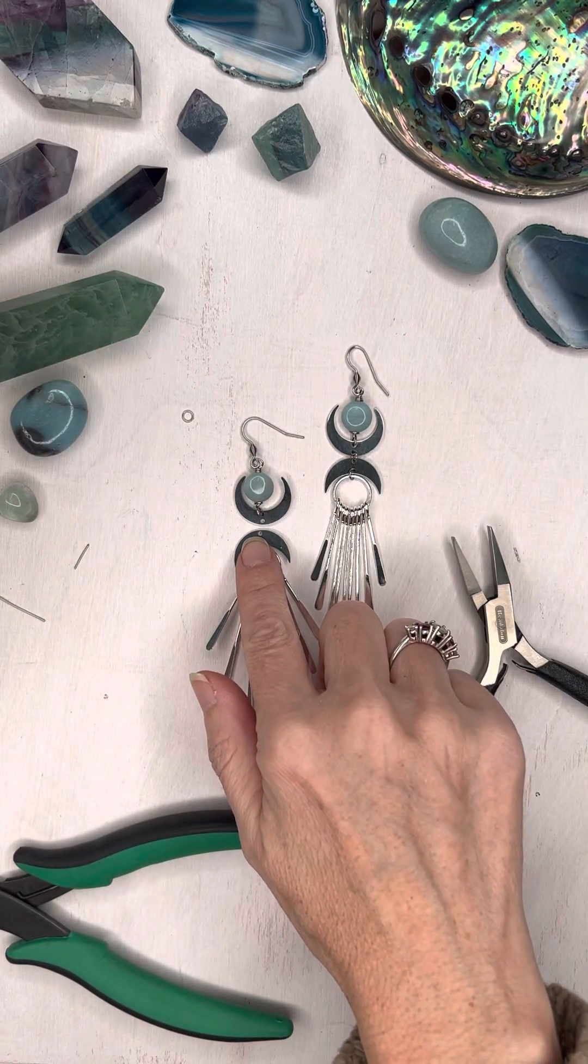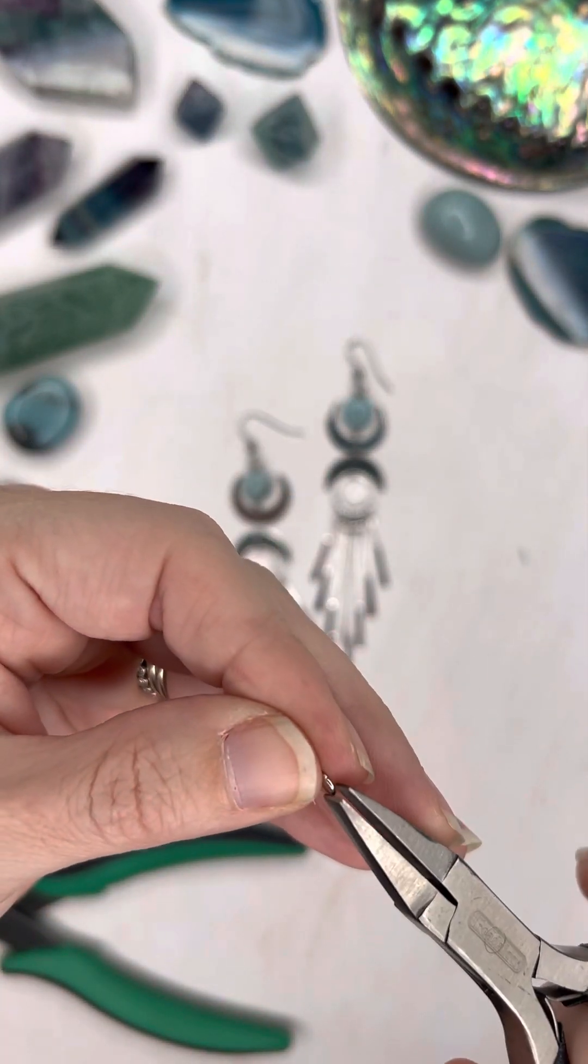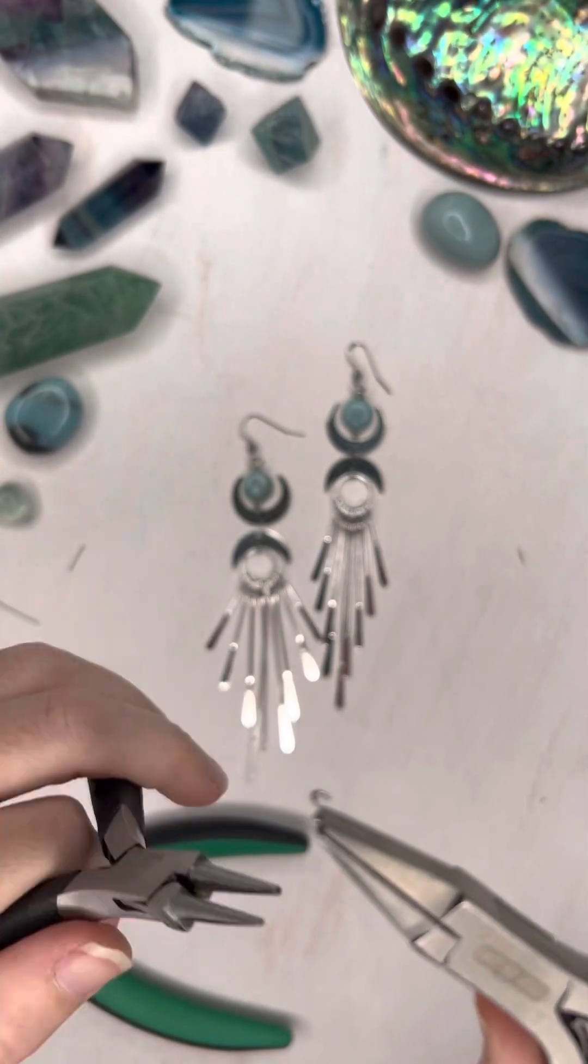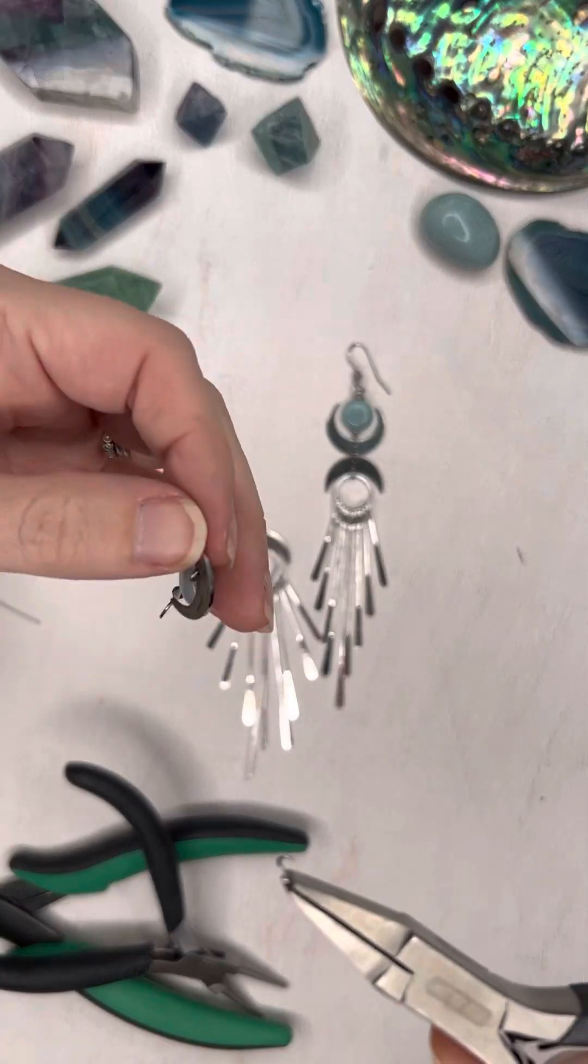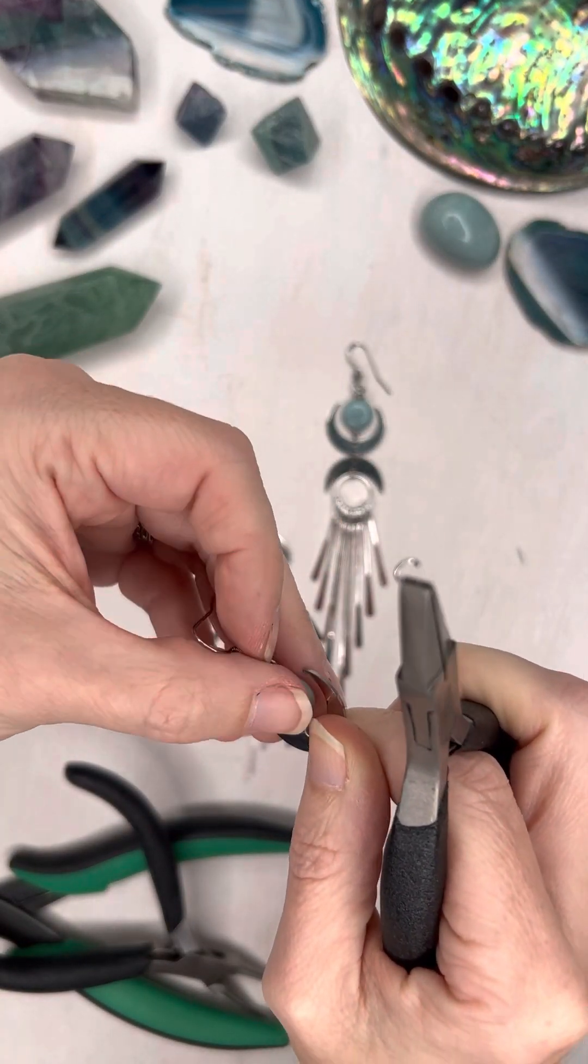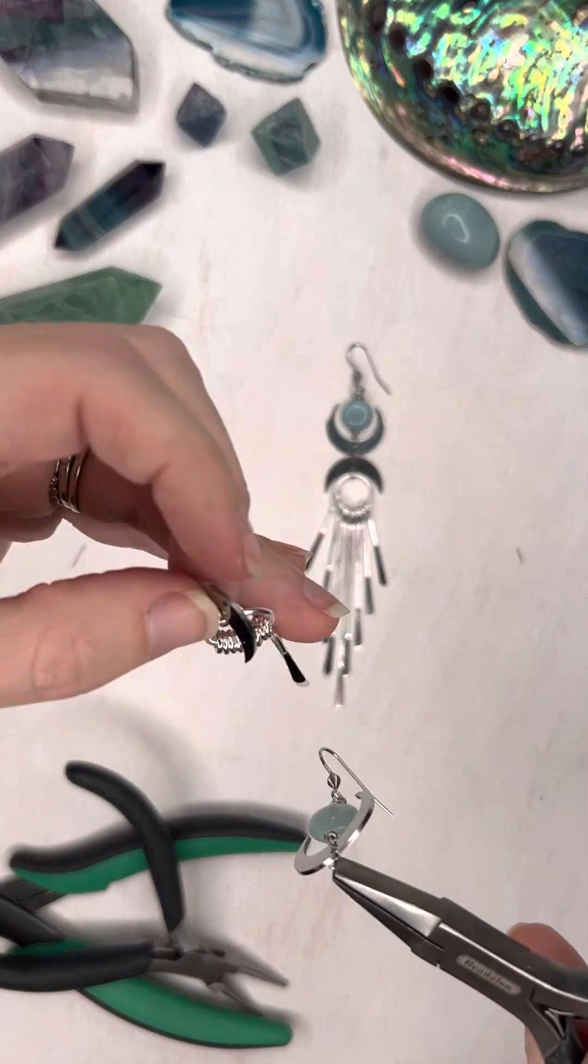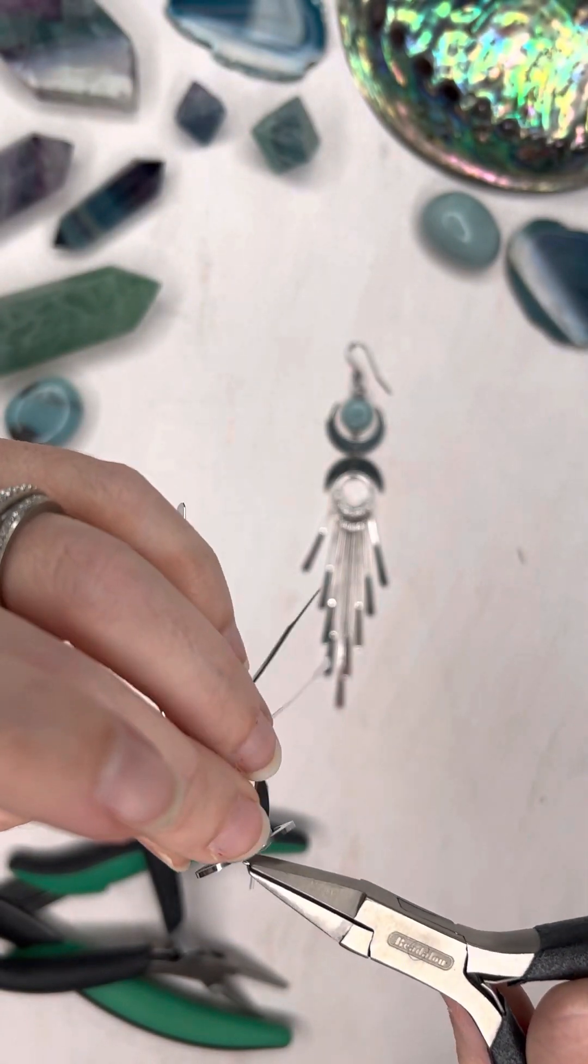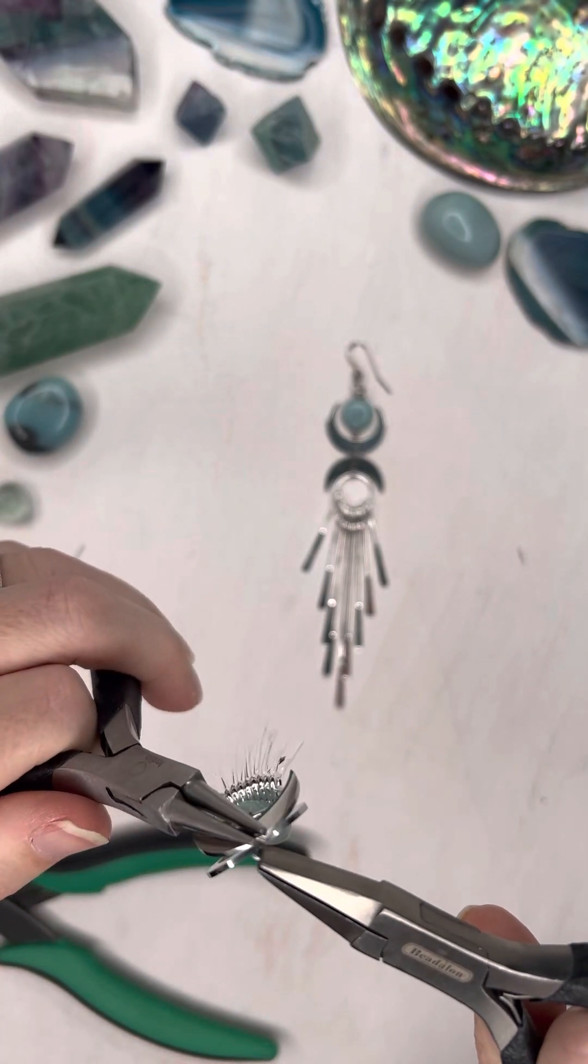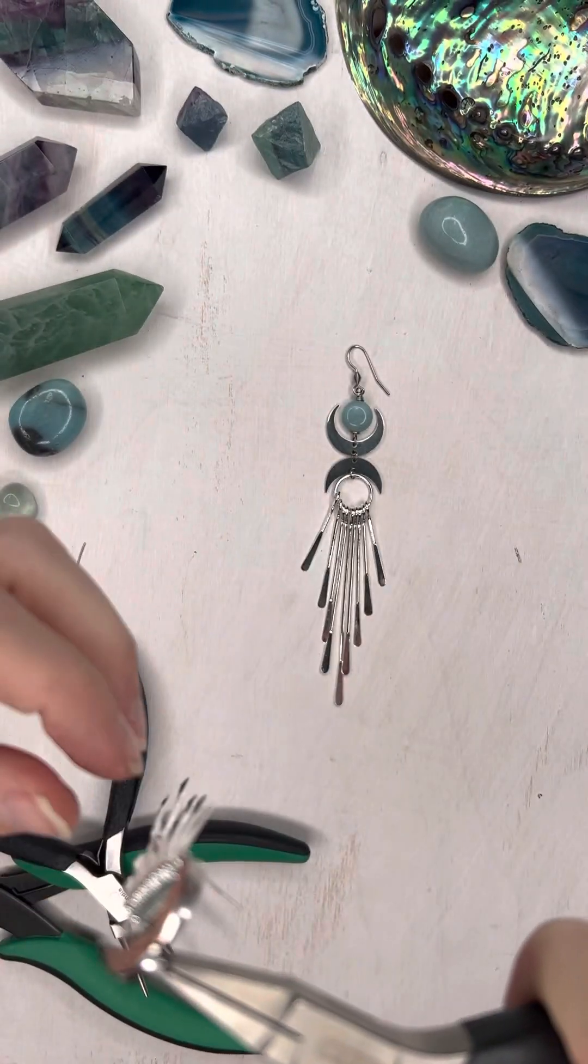Next, I want to connect these two pieces using a jump ring. So I'm going to take my pliers and twist that open. And I'm going to make sure this is the front of it. And then I want to make sure that this is going the correct way to where the paddles open in the back. Twist that jump ring back into place.